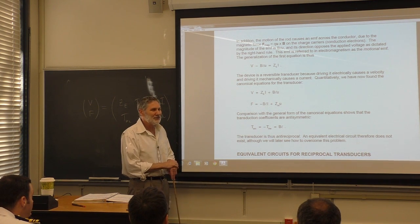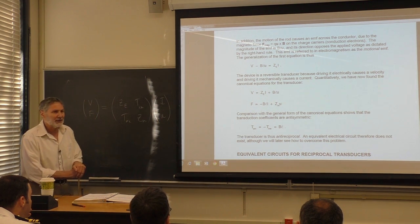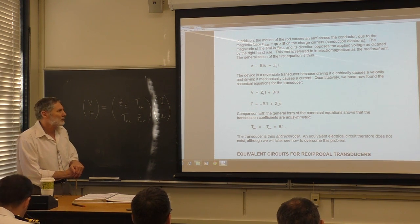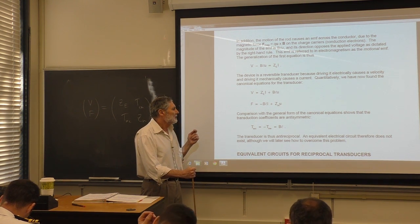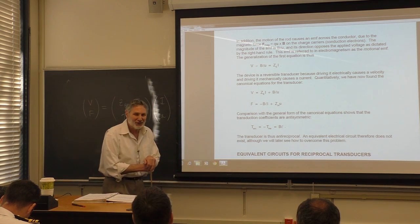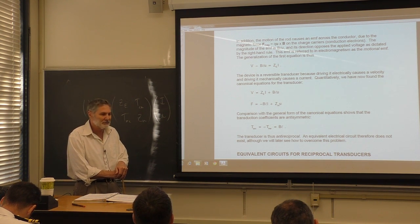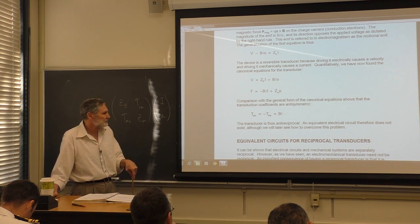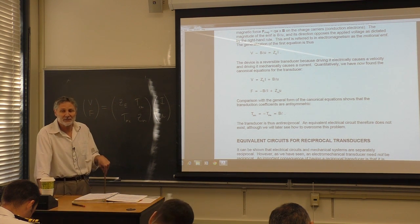Summarizing the electrodynamic transducer: T_em = +BL and T_me = −BL. The transduction coefficients are equal and opposite — this is an anti-reciprocal transducer. An equivalent electrical circuit does not naturally exist, but people force one anyway, and we'll see how to do that.